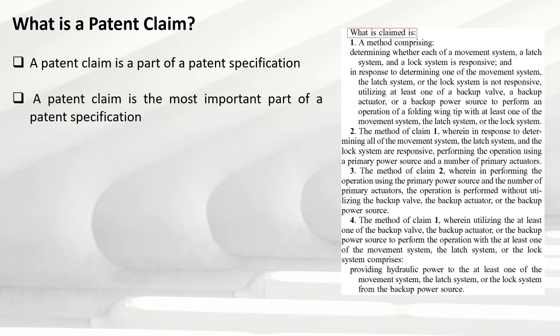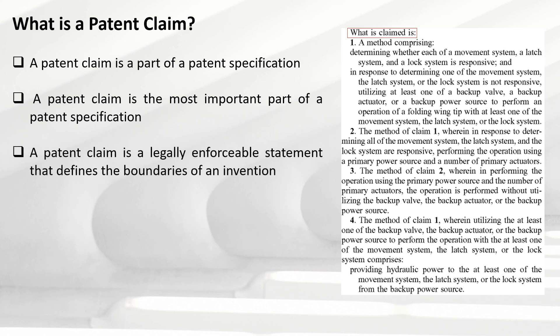The second point states a patent claim is the most important part of a patent specification. Although the patent specification includes several parts, the patent claim forms the most important part — in fact, you can consider it the heart of a patent application. The third point states a patent claim is a legally enforceable statement that defines the boundaries of an invention. It is in the patent claims section that what the invention is trying to protect is written.